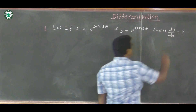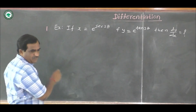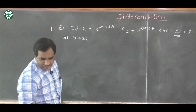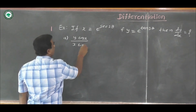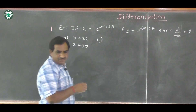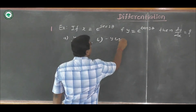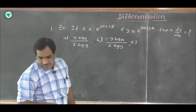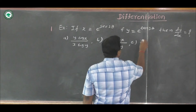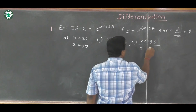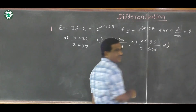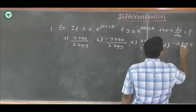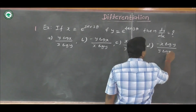Option A is (y into log x) upon (x into log y). Option B is minus (y log x) upon (x into log y). Option C is (x into log y) upon (y into log x). Option D is minus (x into log y) upon (y into log x).